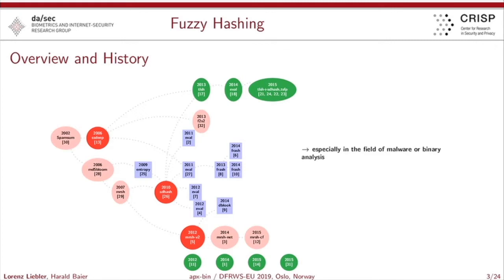As you can see in the green bubbles, application scenarios also include binary analysis and malware analysis. There is plenty of research out there where fuzzy hashing schemes are discussed for the task of matching two binaries with each other, or for classification tasks in malware analysis.